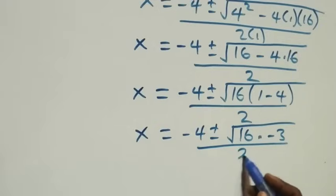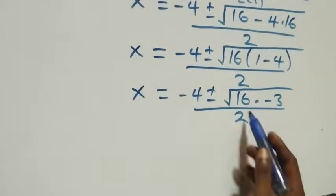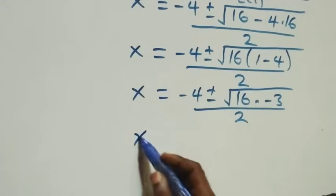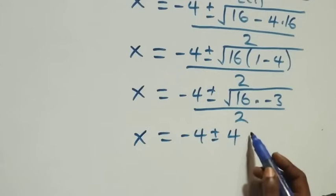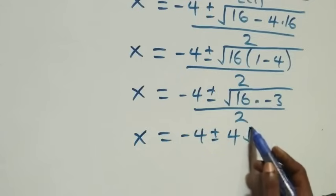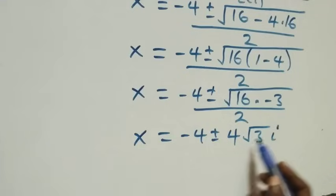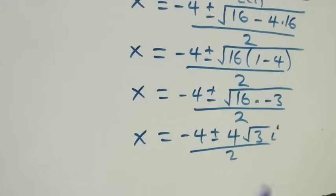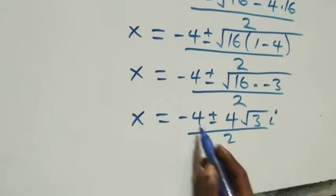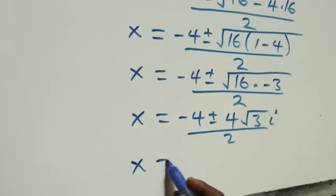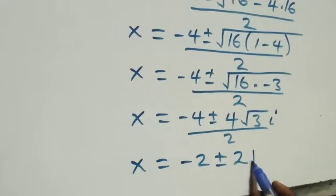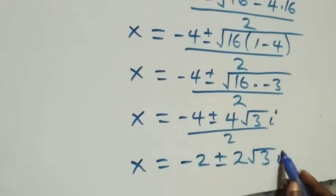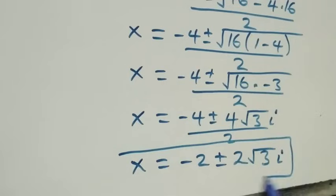Taking out √16 = 4, we get x equals (−4 ± 4√3·i) over 2. Dividing through by 2 gives x equals −2 ± 2√3·i. These are two more complex solutions.